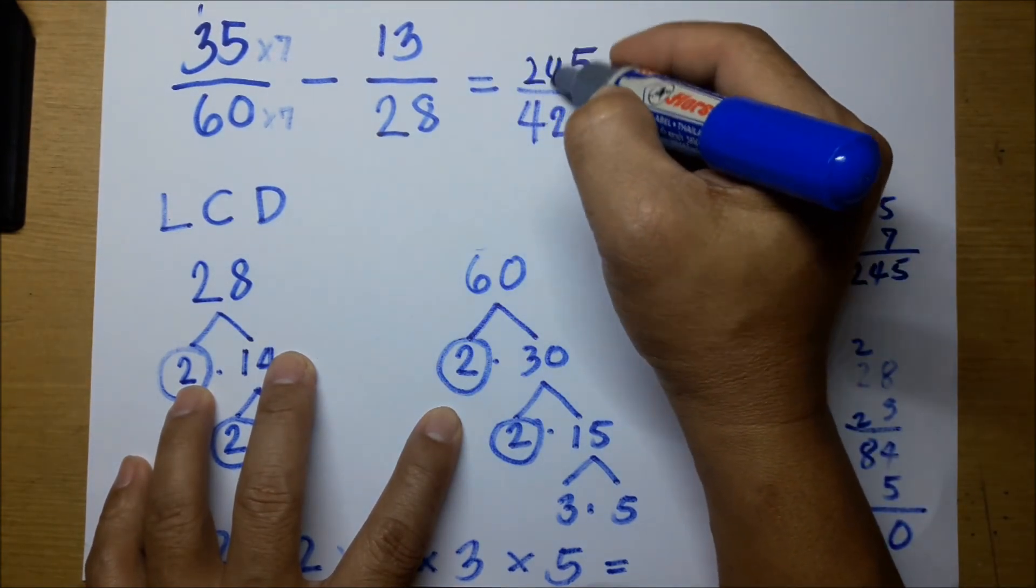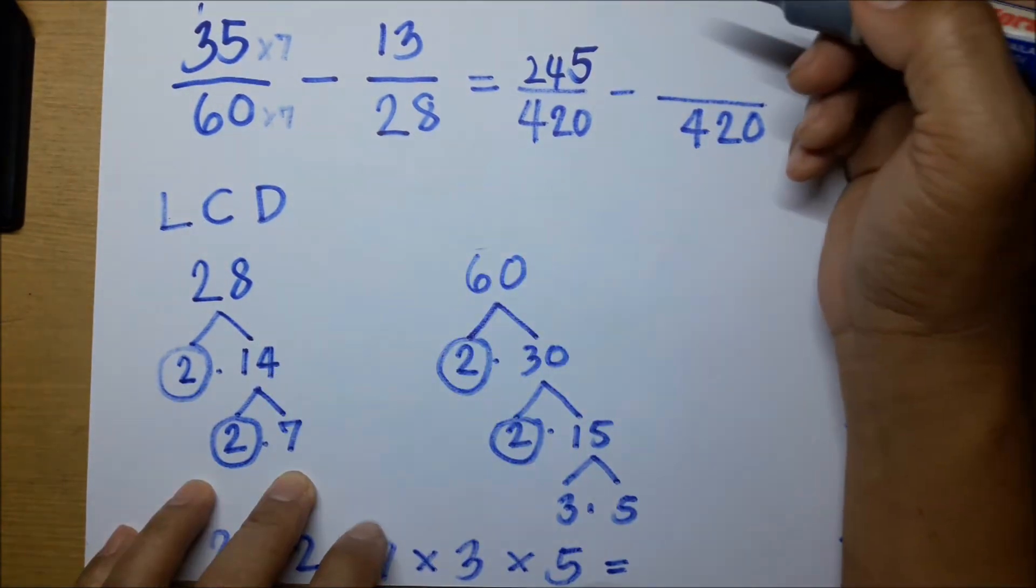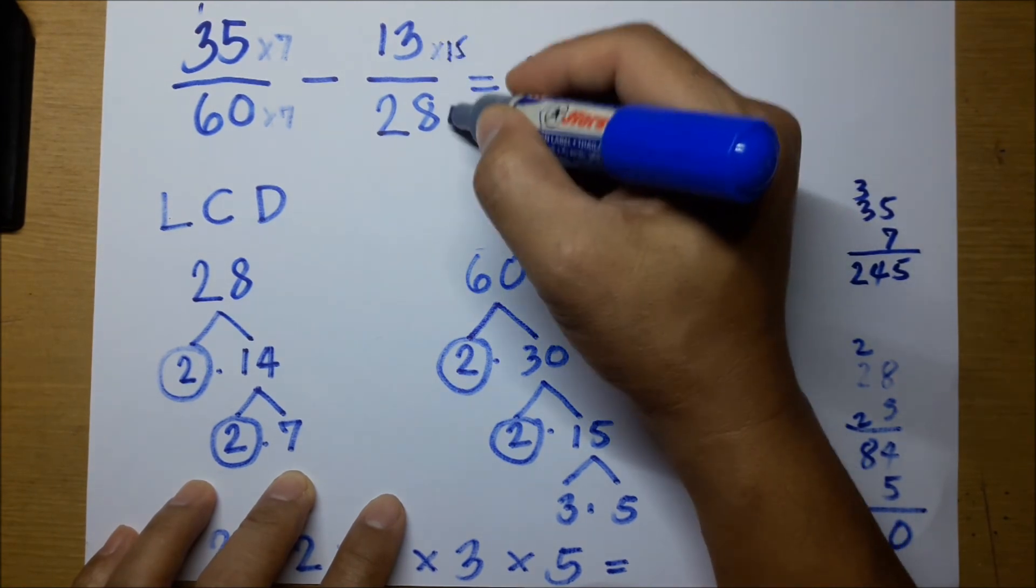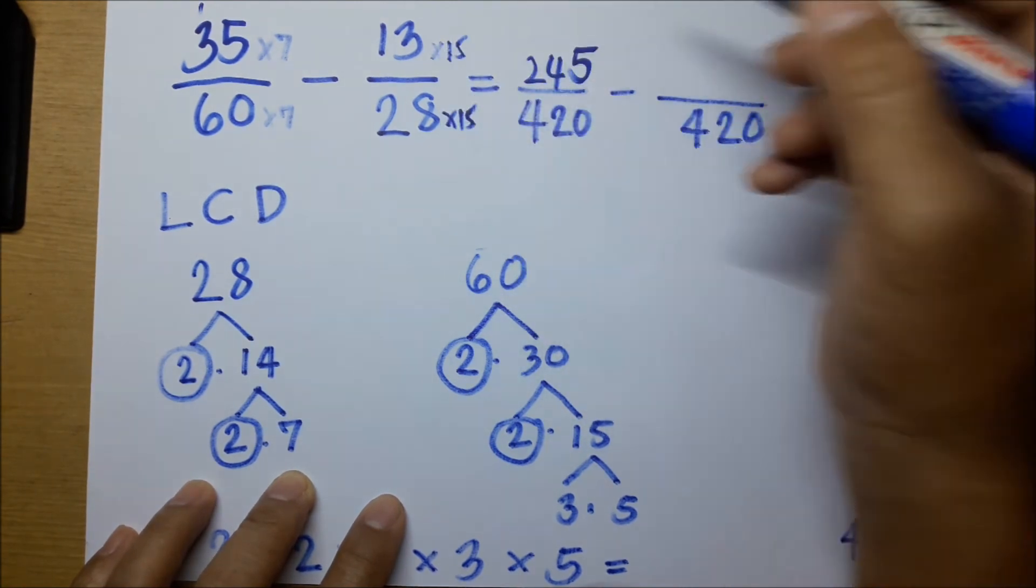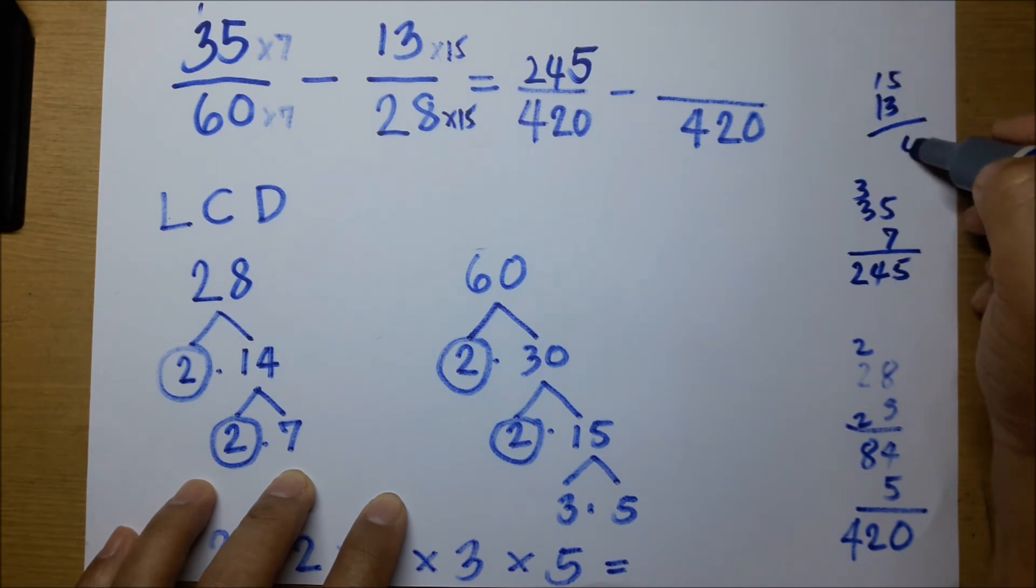Then 420 divided by 28, so 15. Multiply natin ito ng 15. 13 times 15 gives us 195.